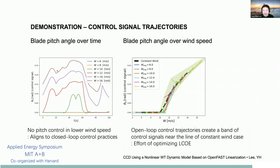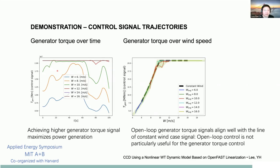The second control signal is generator torque. Generator torque over time is shown on the left; achieving higher generator torque maximizes power generation. At higher wind speeds it saturates at the maximum, while at lower wind speeds it decreases and becomes the active control signal. Plotting generator torque over wind speed shows that all trajectories closely overlap with the constant wind speed case, meaning open-loop control is not particularly useful for generator torque control here.